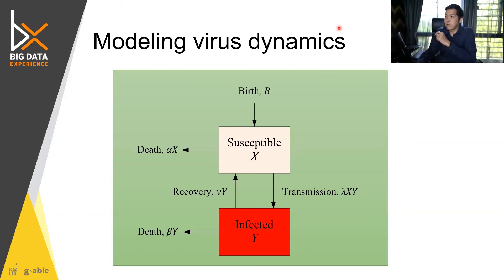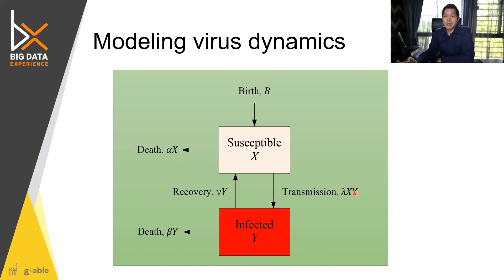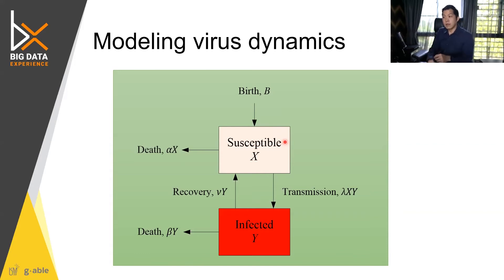What we are looking at today is the mechanism of infection — the change between groups, from susceptible to infected through transmission, which occurs from interaction between the two groups. Social distancing reduces lambda, the transmission rate. There is also recovery changing groups, plus death in each group and births entering the susceptible group. Researchers have studied this type of model for quite a long time using differential equations.